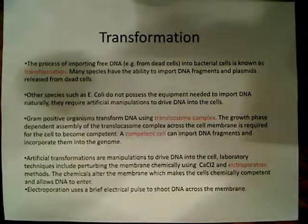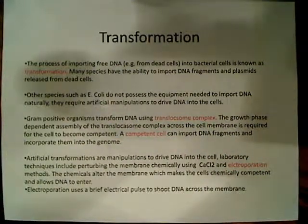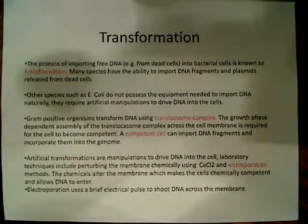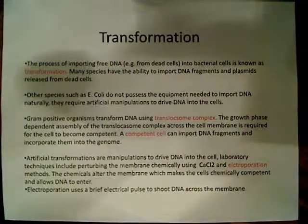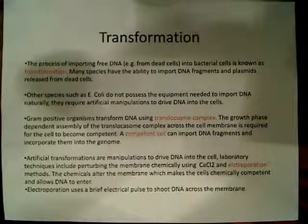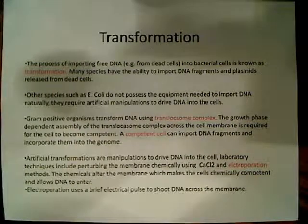E. coli requires artificial manipulation to take up DNA. Gram-positive organisms transform DNA using what's known as a translocosome complex, and the growth-phase-dependent assembly of the translocosome complex across cell membranes is required for the cell to become competent. The term 'competent' means the cell is able to take up DNA from the environment and incorporate it into its genome. So a competent cell can import DNA fragments and incorporate them into its genome.